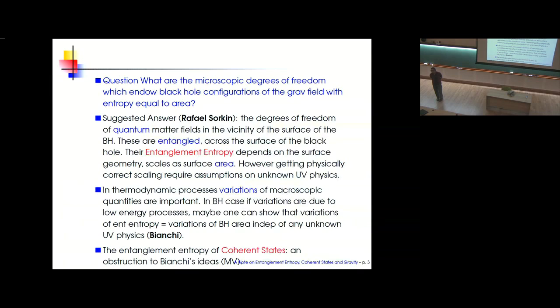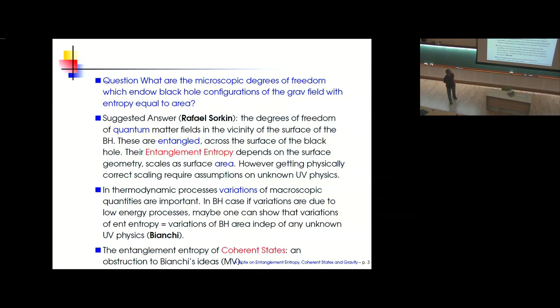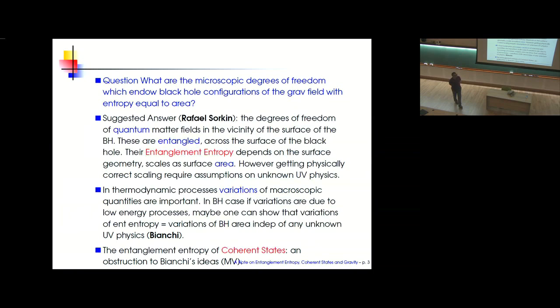There's a beautiful answer suggested by Rafael Sorkin in the early 1980s. He suggested that the microscopic degrees of freedom are the degrees of freedom of quantum matter fields in the vicinity of the surface of the black hole. You have the black hole geometry, matter on this geometry, and you put the matter in its vacuum. Field operators inside and outside the horizon are very strongly correlated, so the vacuum state is highly entangled. If you compute the entanglement entropy, you find it depends on the surface geometry and scales as the surface area. However, the precise proportionality constant and even the finiteness of this entanglement entropy depends on assumptions about unknown ultraviolet physics of quantum gravity.